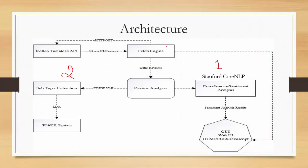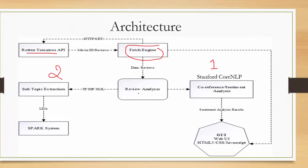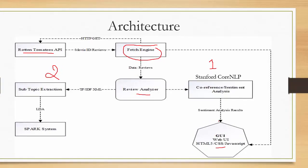The system architecture consists of a central fetch engine responsible for communicating with the API, the review analyzer, and the web GUI. The web GUI lets users search for any movie keyword. The fetch engine collects that keyword from the GUI and passes it to the Rotten Tomatoes API via a standard HTTP GET request. All movie IDs matching the keyword are returned to the GUI, and when a user selects a specific movie, reviews are collected from the API by movie ID.